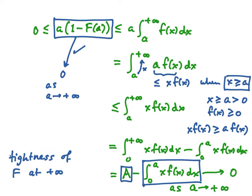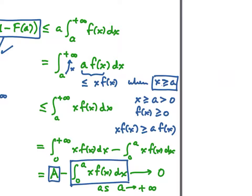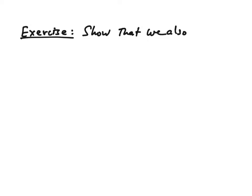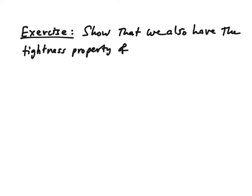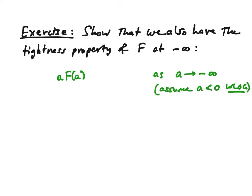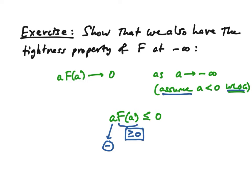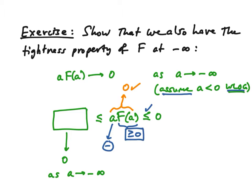We also have to verify tightness at minus infinity — that A·F(A) → 0 as A → −∞. I'll leave that as an exercise. Try applying the same methods: an upper bound is zero (since A is negative and F(A) is non-negative), and find a lower bound that also goes to zero. The squeeze theorem will then verify this claim, showing we have tightness automatically.